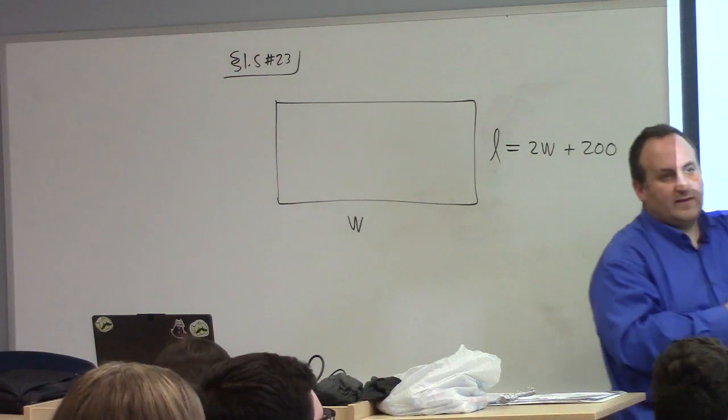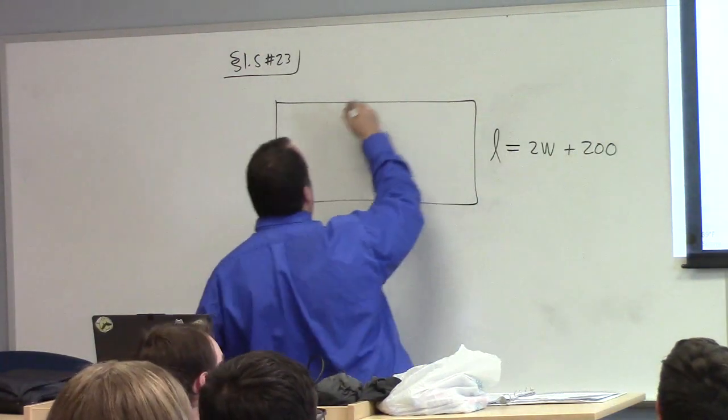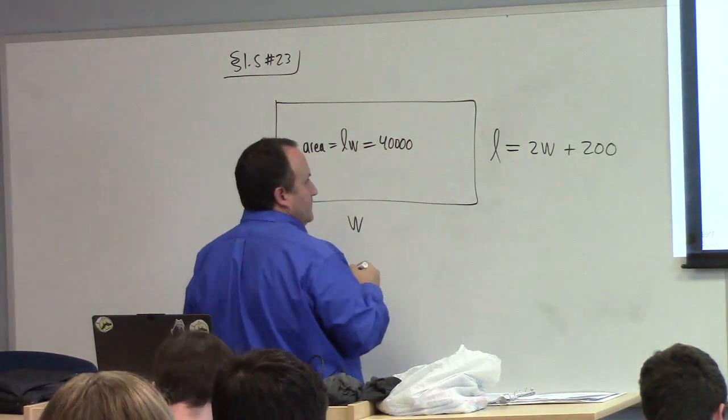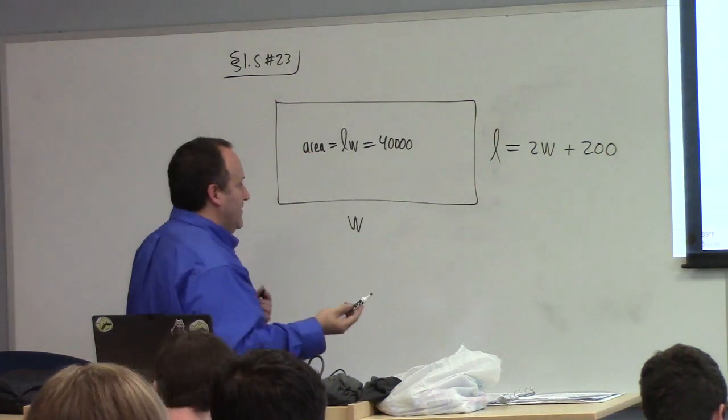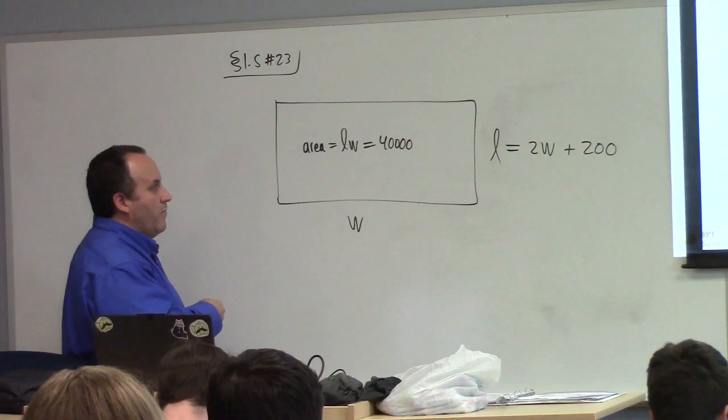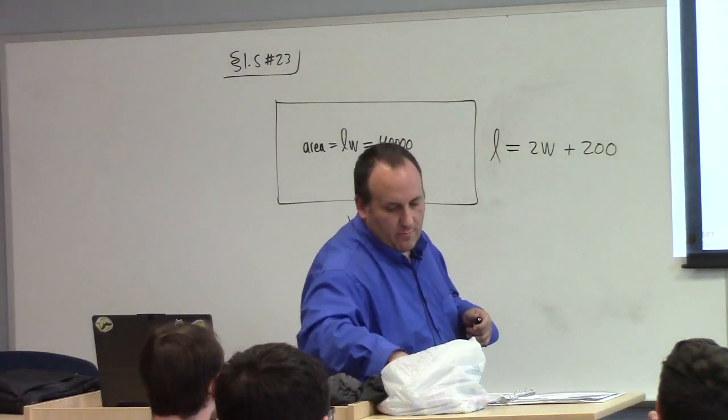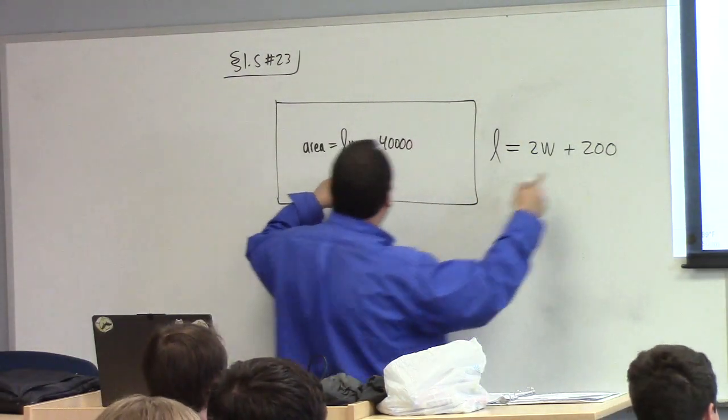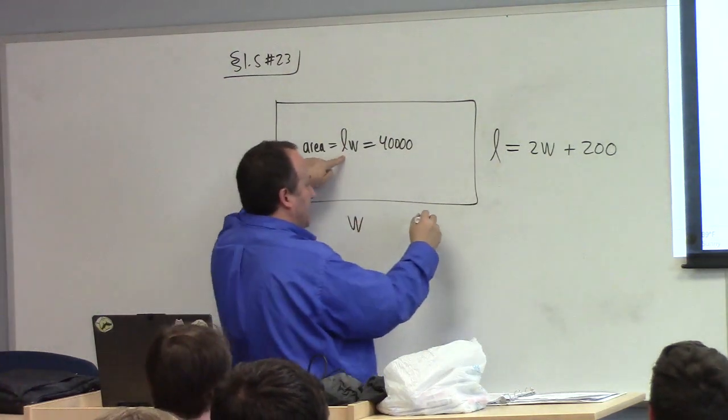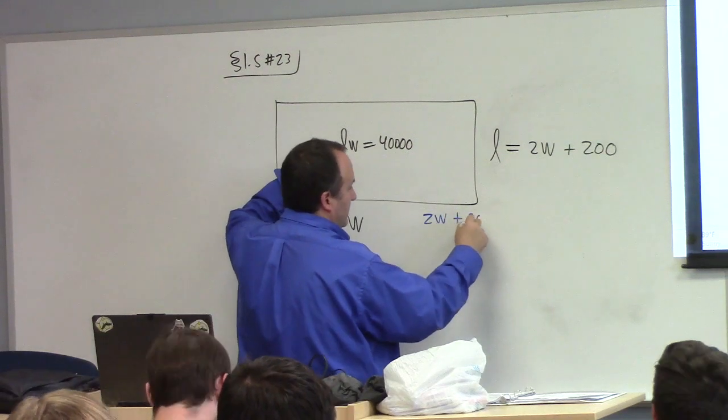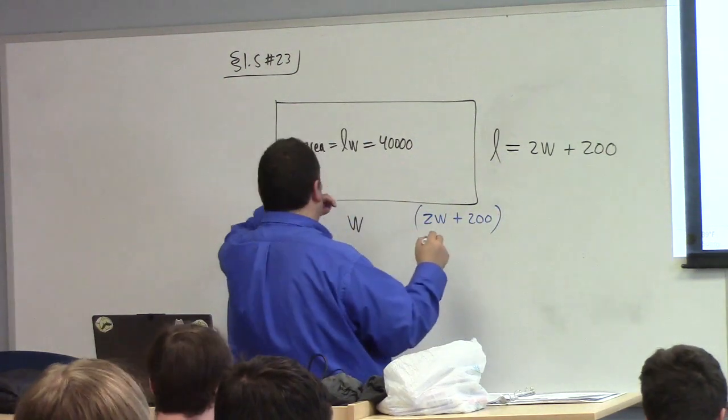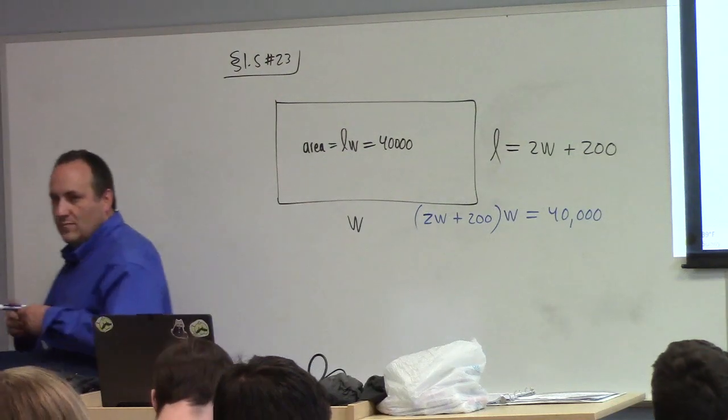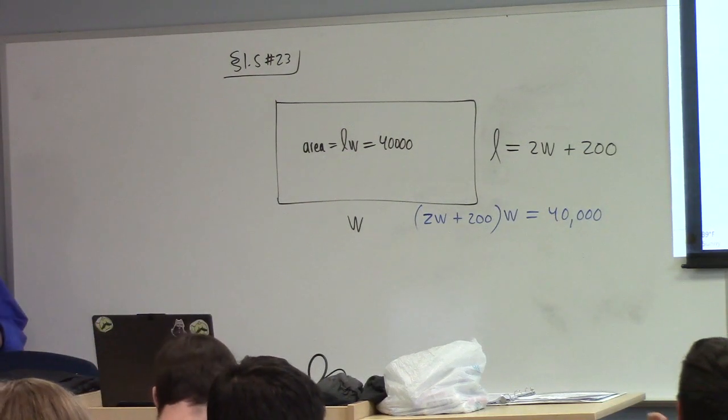What's the other thing? The area is 40,000. What's that tell us? What's the area? Area is length times width is 40,000. So what does this have to do with quadratic equations? What should we do? What we want to do is take this formula and plug it into that L. That will give us 2w plus 200 times w equals 40,000.